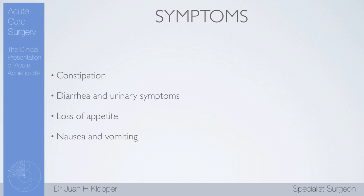Loss of appetite is very common — most patients will have it. Nausea and vomiting, not so much; maybe half or slightly less than half of patients might actually be nauseous and vomit. The classic symptom presentation is peri-umbilical vague pain spreading to the right iliac fossa with loss of appetite. Not all patients present like this though — maybe only half present in this classical form.